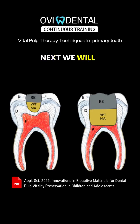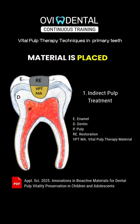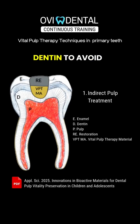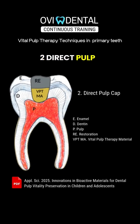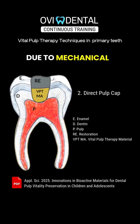Next we will discuss the four vital pulp therapy techniques. 1. Indirect pulp treatment: a biocompatible capping material is placed over remaining demineralized but non-infected dentin to avoid pulp exposure. 2. Direct pulp cap: the capping material is applied directly to a small, exposed pulp area due to mechanical or traumatic exposure.